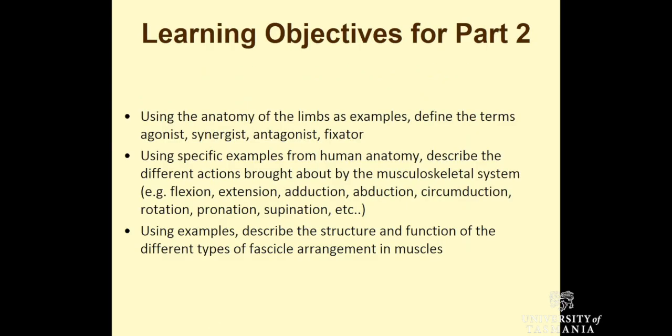The learning objectives for Part 2 are that you should be able to use the anatomy of the limbs as an example, define the terms agonist, synergist, antagonist, and fixator. Using specific examples from human anatomy, describe the different actions brought about by the musculoskeletal system.